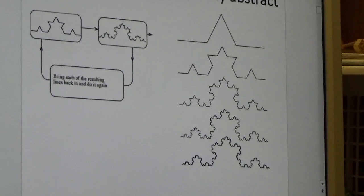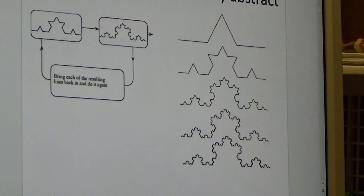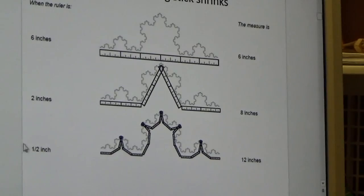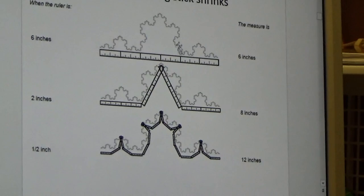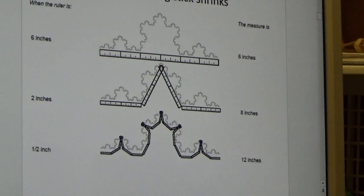Cantor concluded that the total length of such a curve would be infinite, because the smaller you shrink down the ruler, the larger the curve size goes. If you had a ruler that was six inches long, you would miss all the little nooks and crannies. As you shrink your ruler size down, you get more and more length that you're measuring. Mathematicians thought that was very strange and that we really shouldn't talk about these weird counter-examples to normal mathematics.